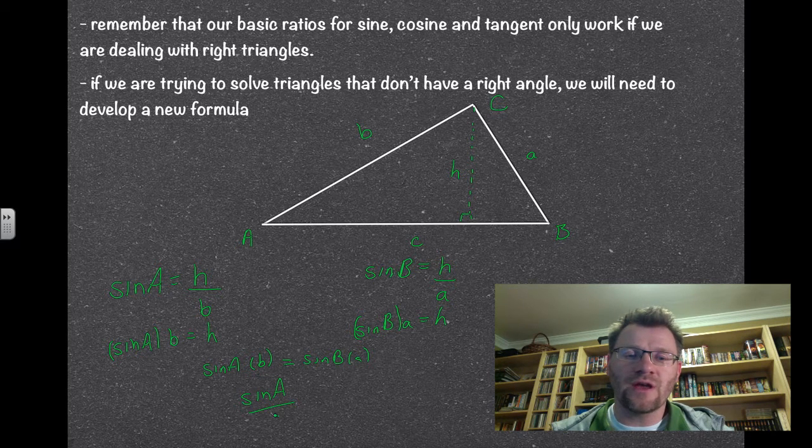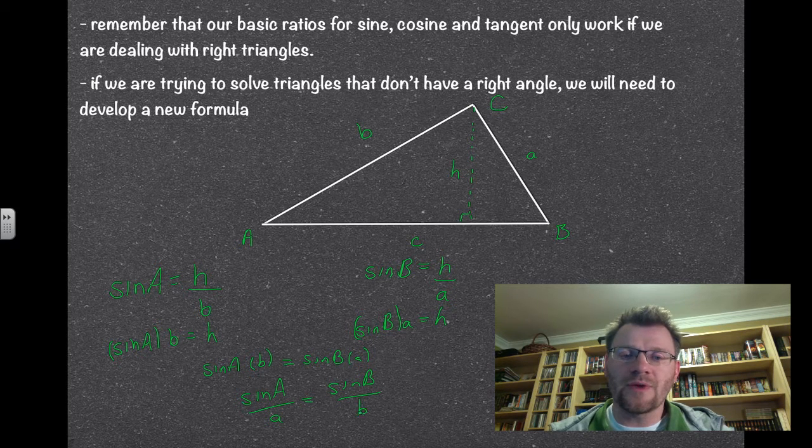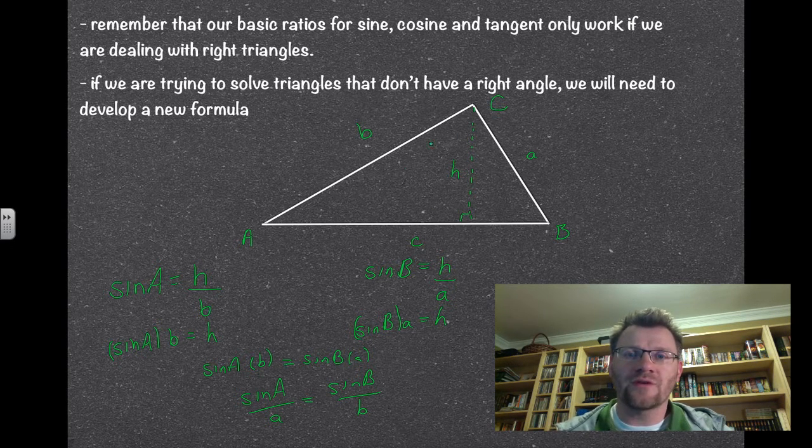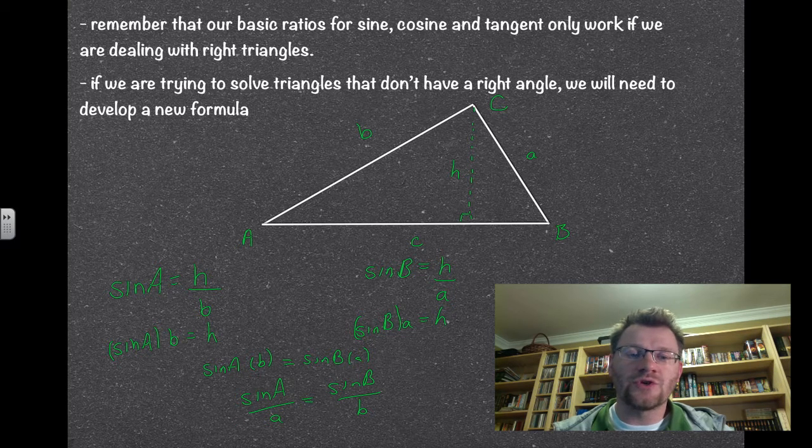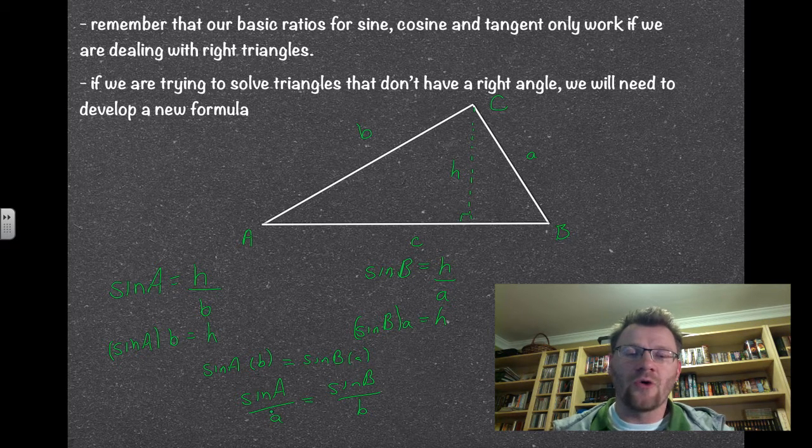Which is sine a over a equals sine b over b. So if you don't have a right triangle, we can use our law of sines. If we know two angles and one of the sides opposite one of those angles, we can find the second side. Or if we know two sides and one angle, we could find the missing angle.